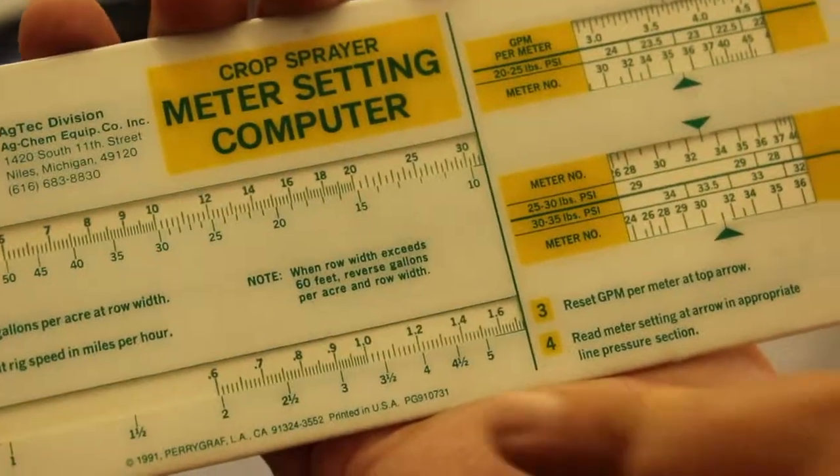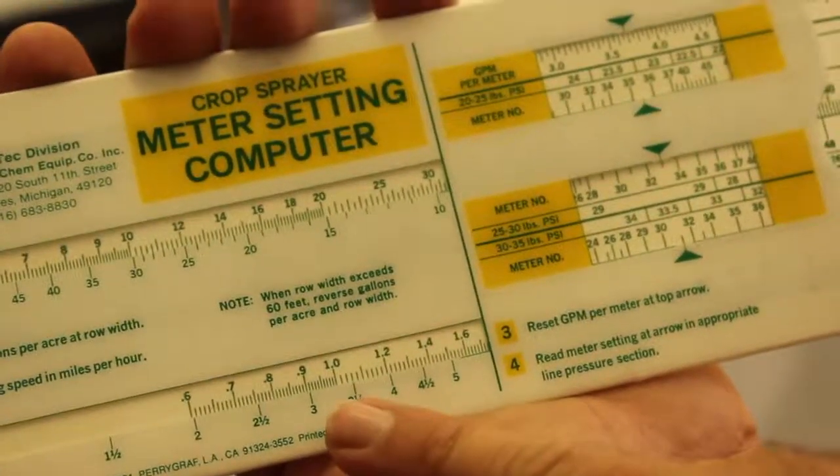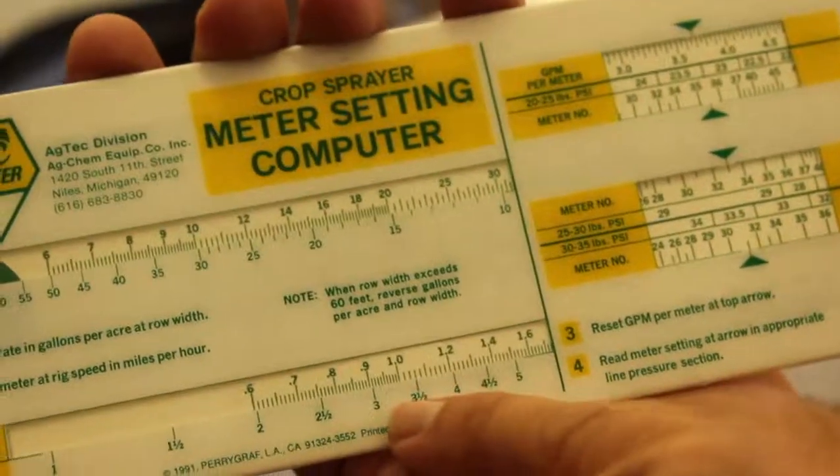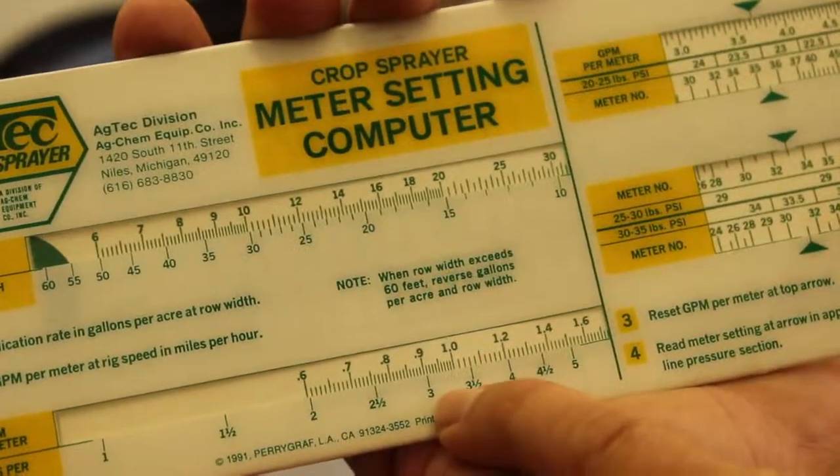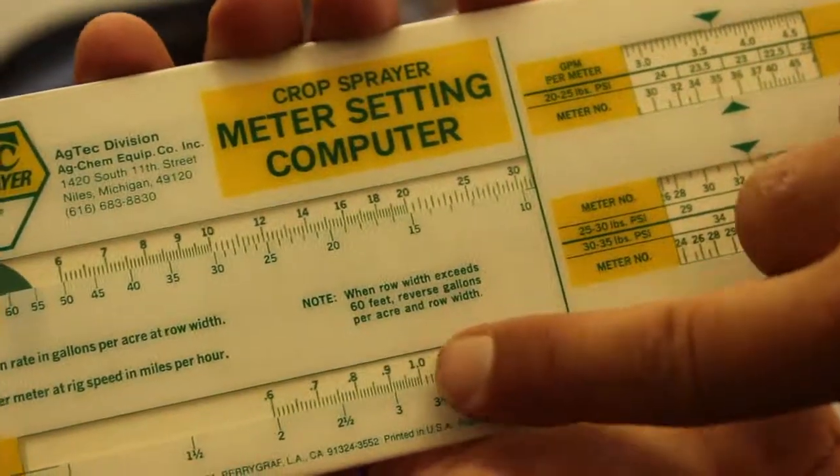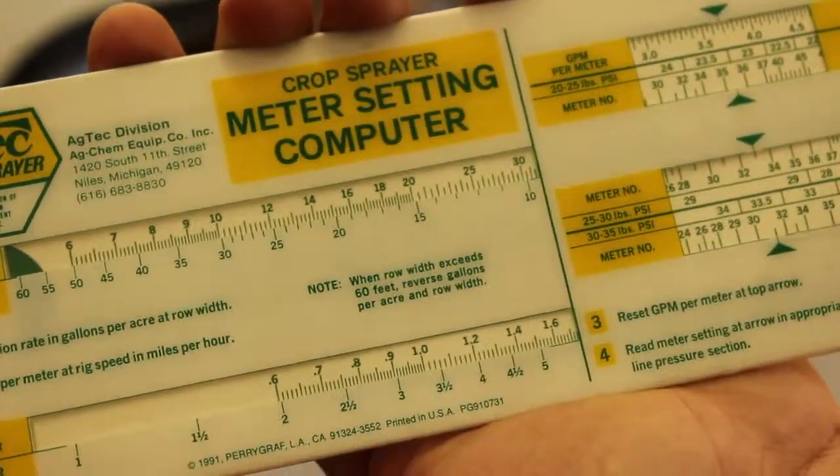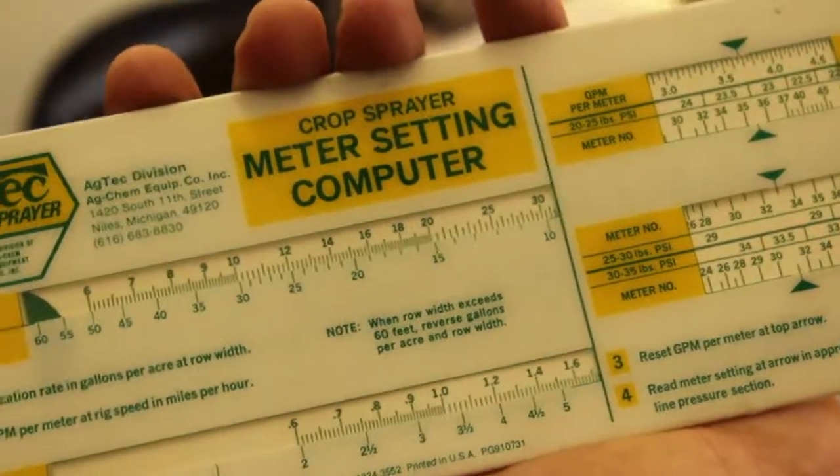Next, we need to know how fast we're going to be going while we're spraying. So let's say, again for the sake of argument, we're going 3 miles an hour. So this gives us .9 gallons per minute per meter at 3 miles an hour.